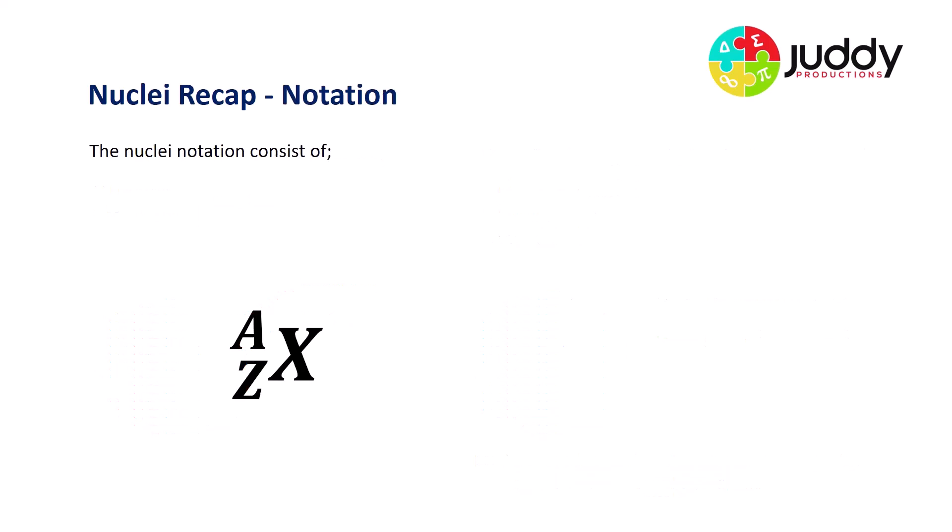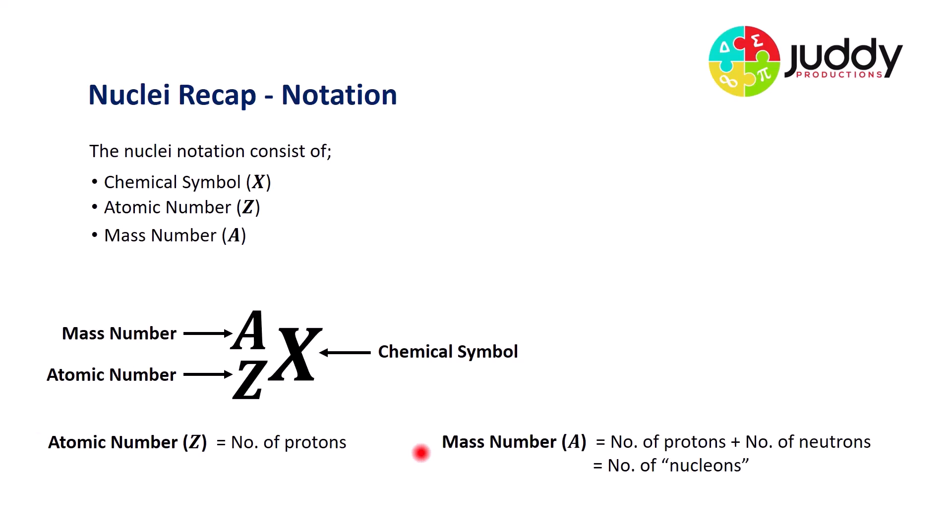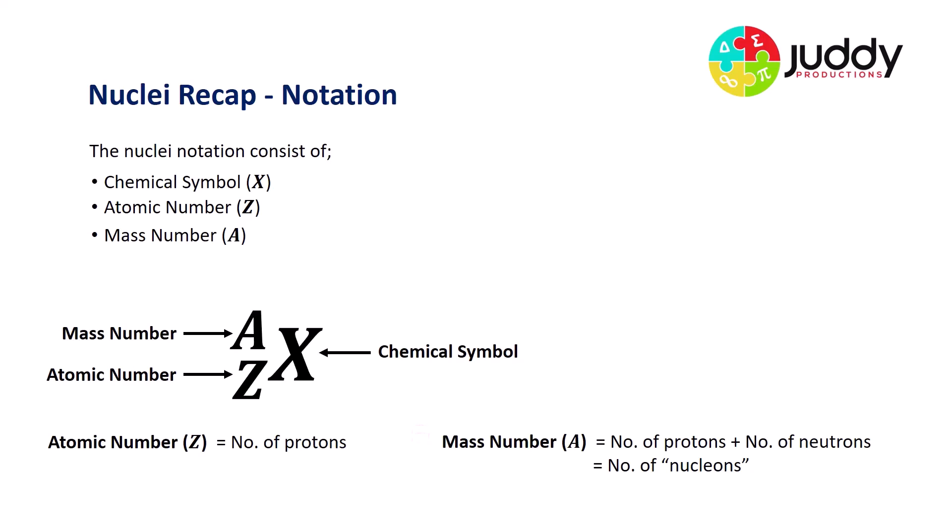So our notation very quickly, we know that the nuclei notation consists of, first of all, a chemical symbol, where we have here at the moment, the letter X, that gets interchanged with whatever symbol we're looking at from the periodic table. The atomic number, which is the number Z, the atomic number, as we've displayed down below, represents the number of protons, and it defines an element. And the mass number A represents the number of neutrons and the number of protons located in the nucleus. And collectively, we can call that combination of protons and neutrons the number of nucleons.